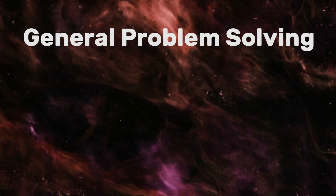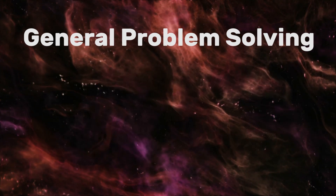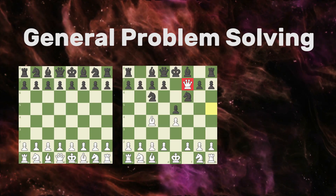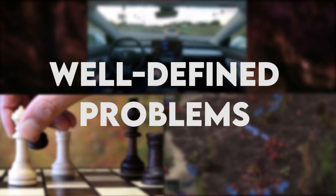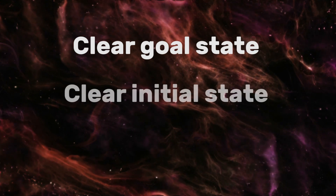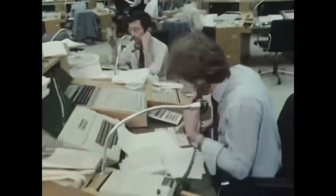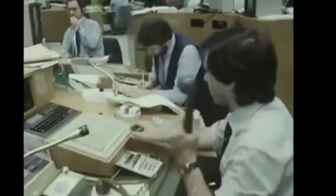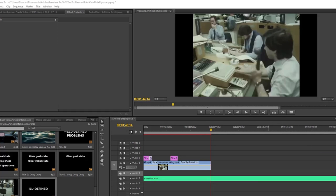Let's start off with problem solving. In AI research, this is usually understood with a search space model, and this involves formalizing the problem into an initial state, a goal state, and operators that transform the current state to a new state. A lot of the problems AI deals with, like playing chess, playing Starcraft, or driving a car, tend to be well-defined problems — they have a clear goal state, a clear initial state, and a clear set of operations. But in real life, problems are usually ill-defined: the goal state is murky, the initial state is unclear, and there's an unspecified set of operations. What I'm doing right now, trying to make a good video, is an ill-defined problem.